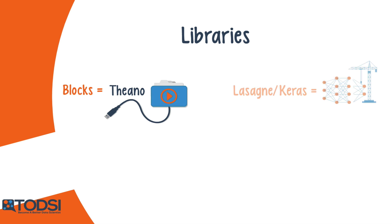The Lasagna package allows you to build a net on top of Theano by providing the net's hyperparameters layer by layer. Keras is another library with a minimalist design that allows you to easily build a net layer by layer, train it, and run it.